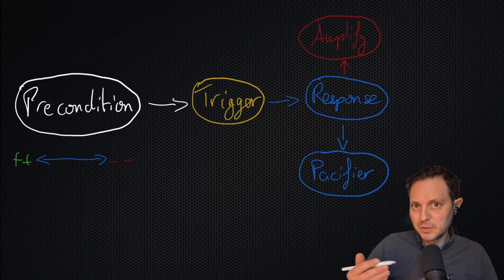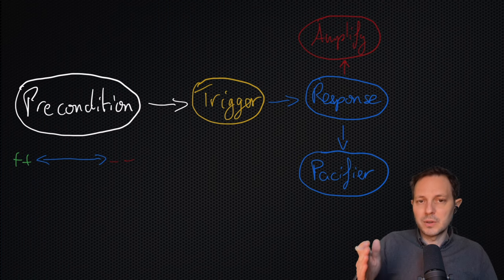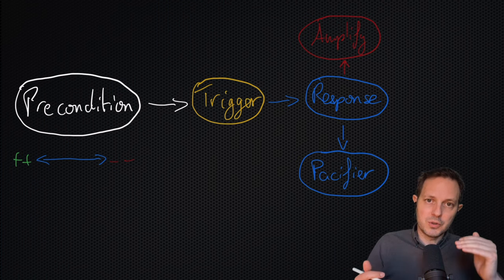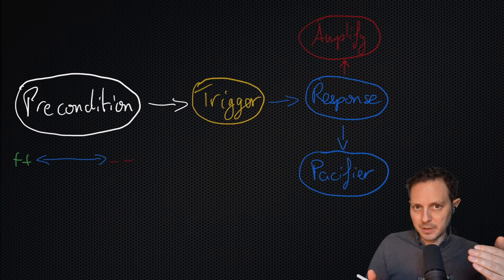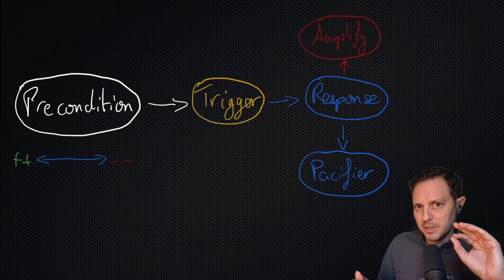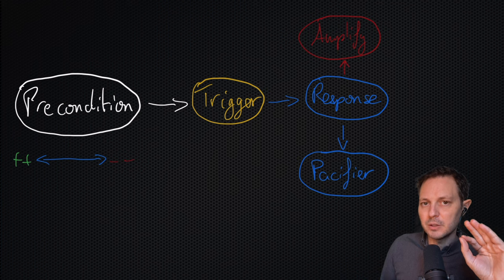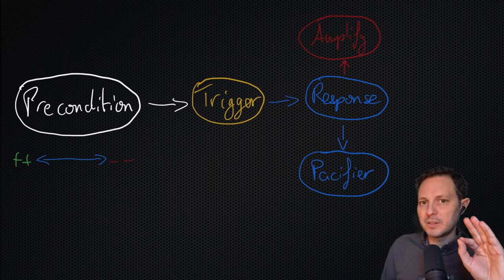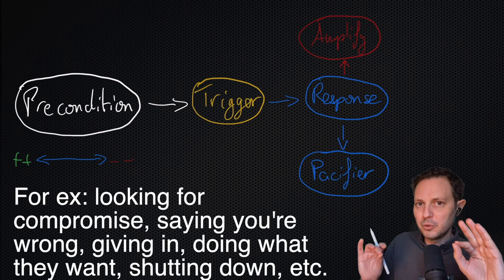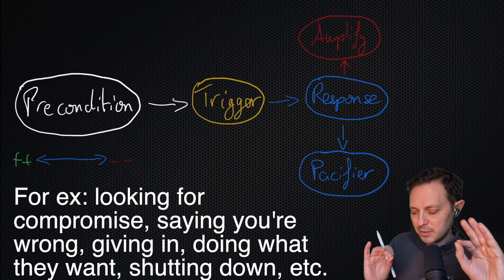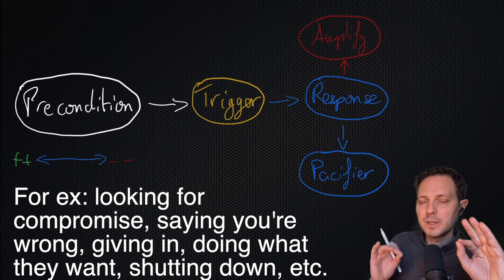So let's imagine that you're quite often stuck in these situations. There's a trigger, there's a response, and either you switch to pacifier or amplifier. I'm assuming most of the time it's going to be pacifier. Simply observe what your regular pacifier is. And once you know what your pacifier is, before you do it, just insert a pause and consider what would happen if you didn't do it.